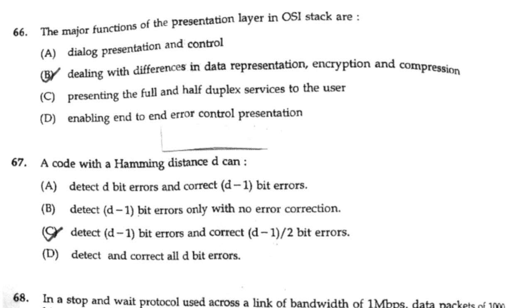A code with Hamming distance D can detect D-1 bit errors and correct floor((D-1)/2) bit errors.